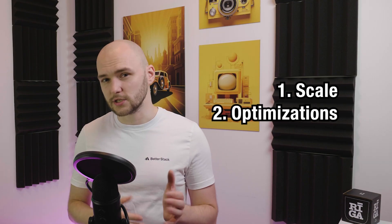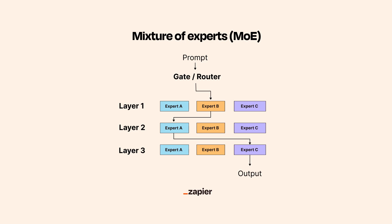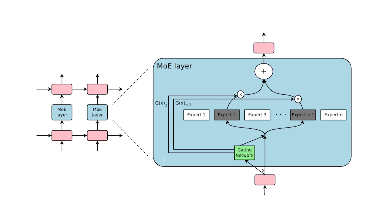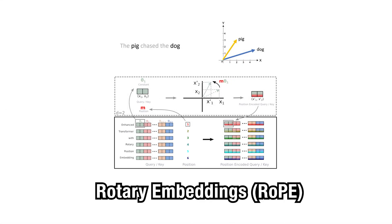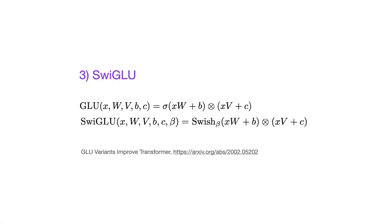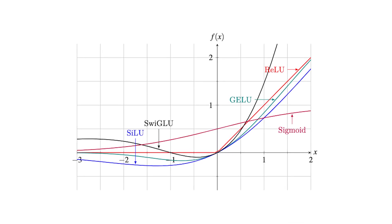The only things that have really changed are scale and some new optimizations. For example, instead of standard self-attention, some newer models use flash attention, which makes the attention calculation way faster and more memory efficient. When it comes to passing token context, newer models use a method called mixture of experts — layers which give the model a panel of specialized subnetworks, but only a few activate per token, making it far more efficient. Then there's rotary embeddings, which improve how models keep track of word order, especially for long contexts. And there's SwiGLU activations, a more flexible alternative to GELU that helps the MLP layers train faster and capture richer patterns.